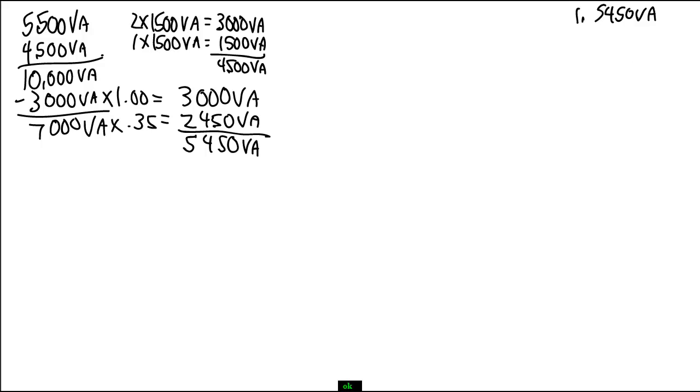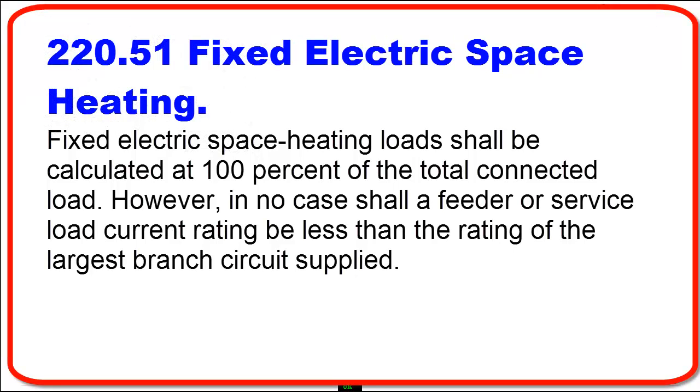Let's take a look at Article 220.51, fixed electric space heating. This is the article that gives us the rules for electric space heating. With electric space heating, we have to take the load at 100%. And the reason for that is electric heat will draw 100% of what it's rated at. So there is no demand factor with that.